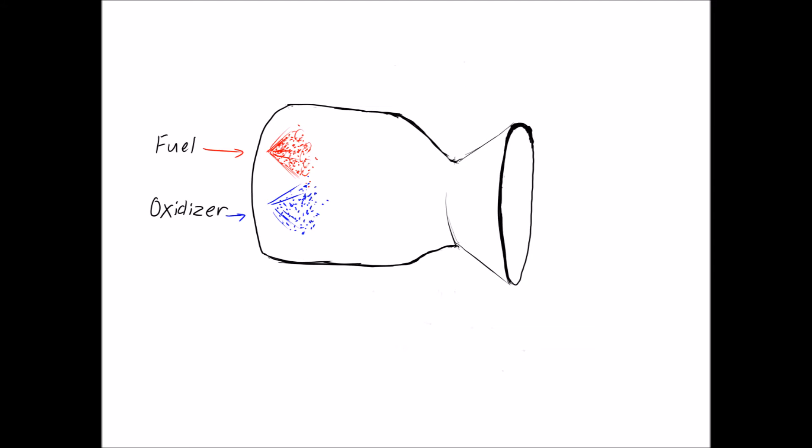Fuel and oxidizer are mixed and ignited in the combustion chamber. Once they produce combustion, the pressure, temperature, and velocity of the molecules increases dramatically. These gas molecules are ejected outward through the nozzle at high speeds, causing motion in the opposite direction. This motion is due to thrust.